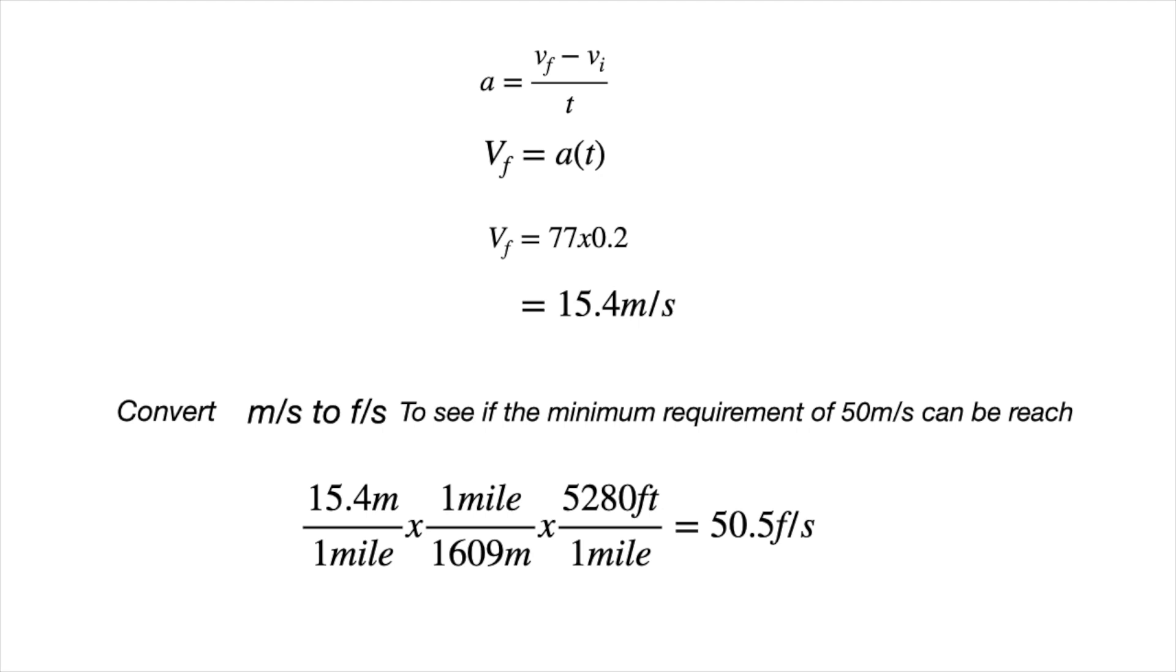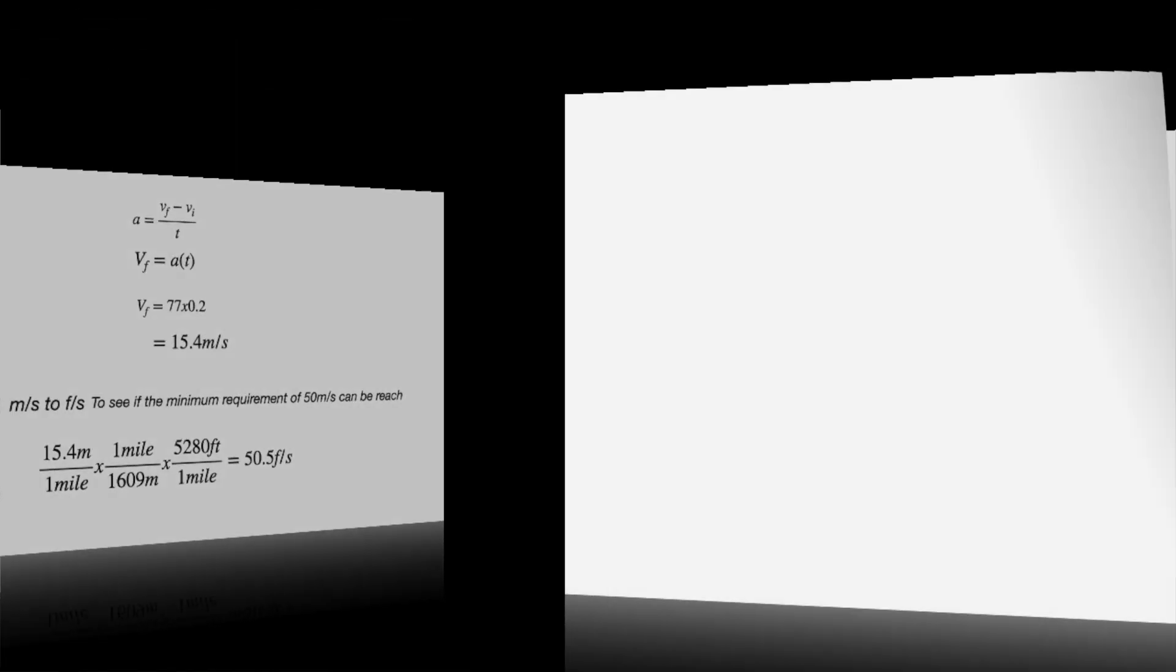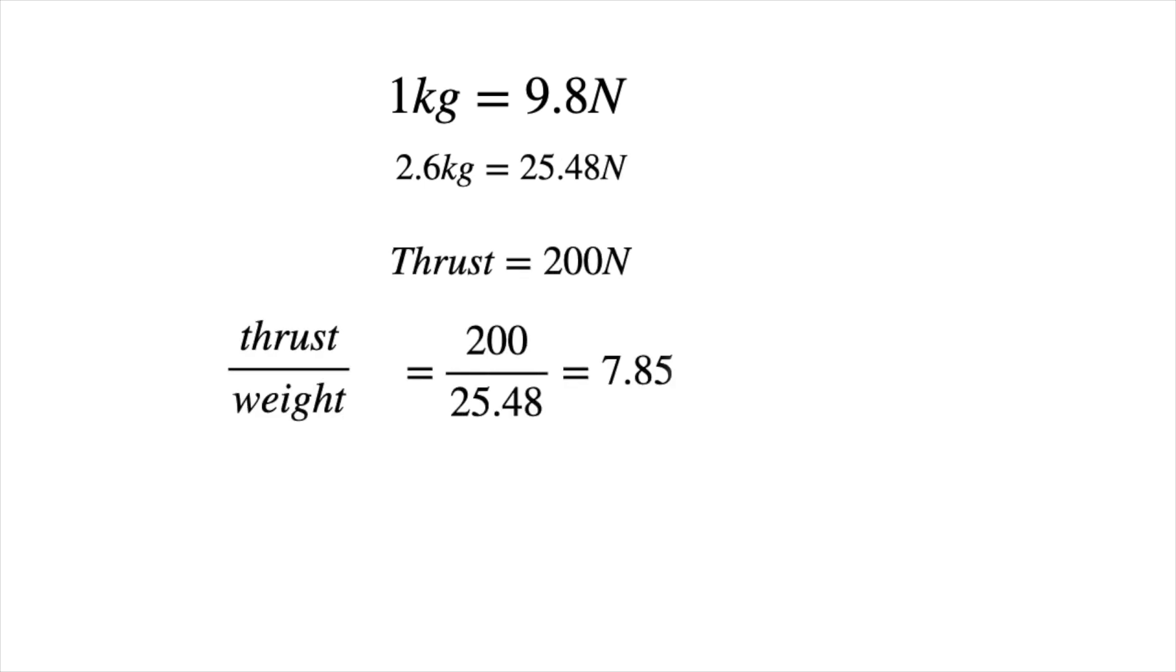Thrust to weight ratio is another concern. It is recommended to have a thrust that is 5 times the weight of the rocket. This is easy to calculate with the information below. 1 kg equals 9.8 N, 2.6 kg equals 25.48 N. The thrust 200 N divided by the weight 25.48 N gives a value of 7.85. This means that we have a thrust to weight ratio of 7.85 to 1, which is well above the safety minimum value of 5 to 1.